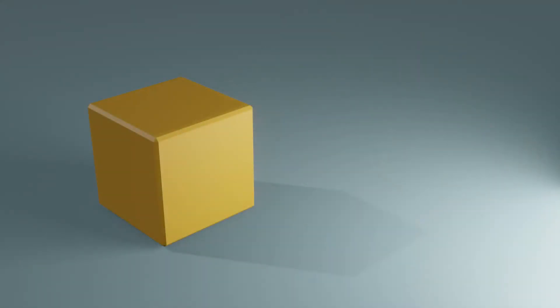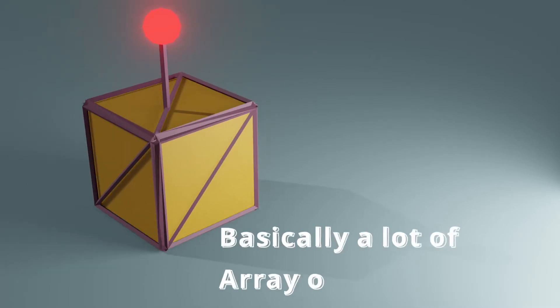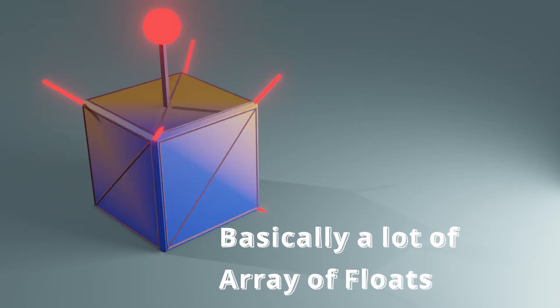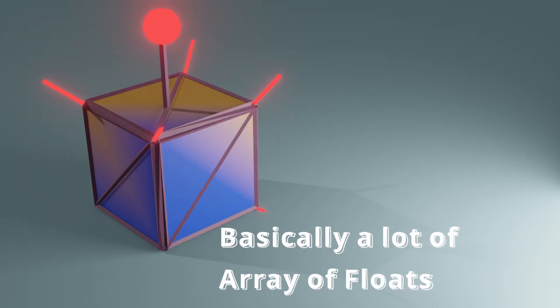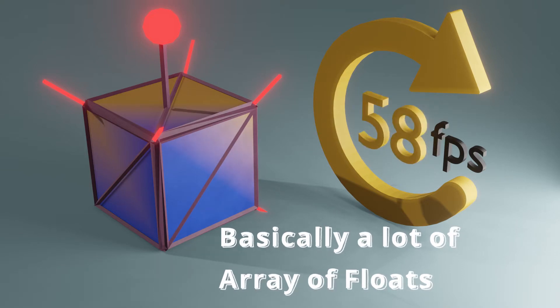What is a 3D model? A bunch of arrays of attributes, some animations, and a few textures. The arrays of attributes are stuff like positions, triangle indices, UV coordinates, normals, vertex colors, and so on. Each array is sent to the GPU and processed by the code there for each frame that is displayed in your game.